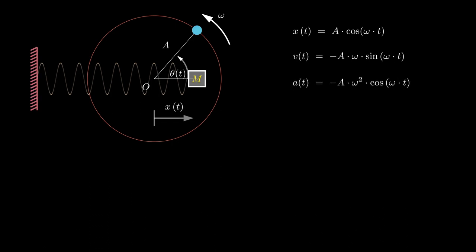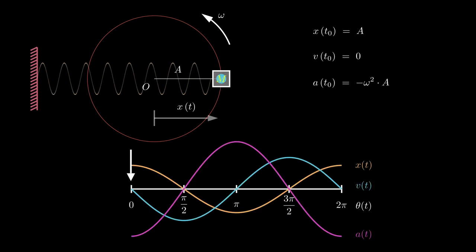Now let's delve into understanding the behavior of displacement, velocity, and acceleration. The graph illustrates how each parameter changes as the angle varies from 0 to 360 degrees, or equivalently as omega times t changes. It's crucial to recall that angular frequency omega is constant when the object undergoes simple harmonic motion. Let's place the mass at the extreme right and release it when time t is 0. At this moment, the velocity is zero because the mass has not yet initiated its movement. However, there is an acceleration directed toward the equilibrium position O, giving rise to a force that propels the mass towards O.